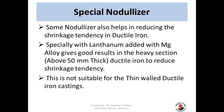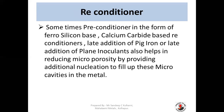Lanthanum-based magnesium can reduce shrinkage tendency in ductile iron but is not suitable for thin wall castings. Again, these inoculants or nodulizers are just an additional way of reducing micro porosity — not a permanent solution. You have to work on your methoding, charge mix, and chemical composition for better feeding efficiency. Reconditioners in the form of ferrosilicon base or calcium carbide base, or late addition of plain inoculants, can help reduce micro porosity by providing additional nucleation to fill micro cavities.